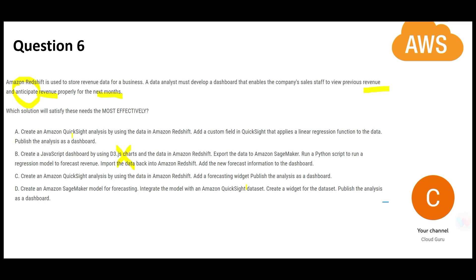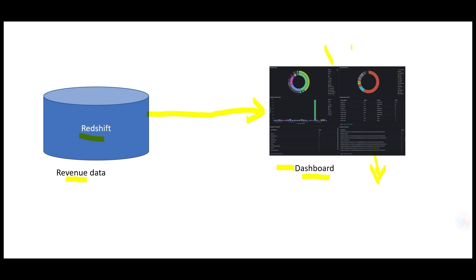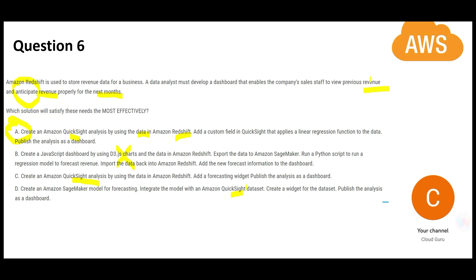Remaining options have QuickSight. Let's scan option A. It is saying it will create QuickSight analysis using data in Redshift. This dashboard will be on QuickSight and use data from Redshift, which is fine. This will help address previous revenue—they can see it in the dashboard. Now we have to address the forecasting piece for the next few months.